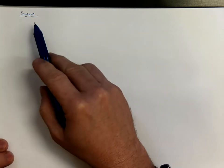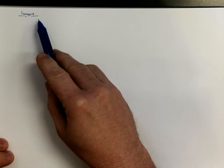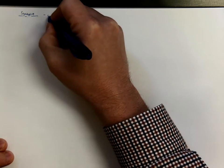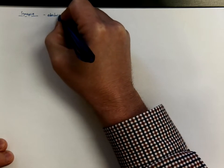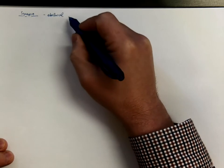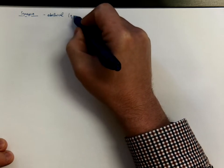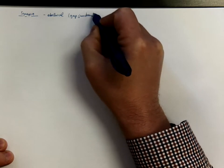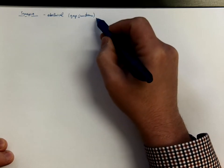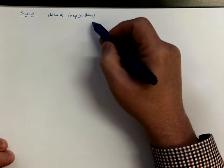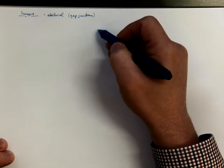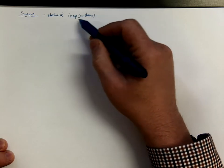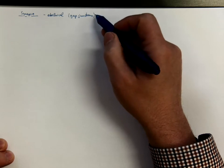The connections between neurons are called synapses. A synapse could be either electrical, meaning the two neurons are connected via gap junctions, also known as nexus. This means charged particles can be transported through these gap junctions, forming a direct electrical coupling of the cytoplasms of the two neurons.